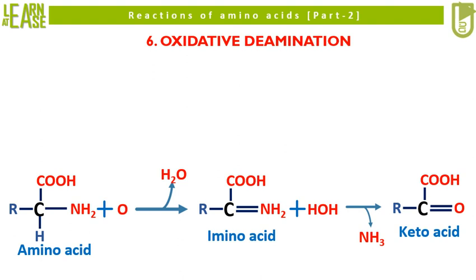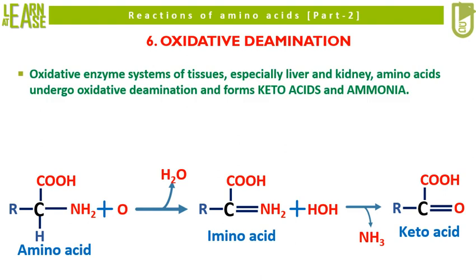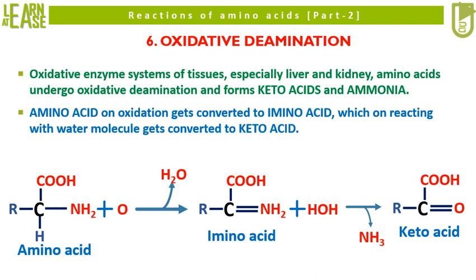Now the sixth reaction I will explain is oxidative deamination. The reaction shows that amino acid on oxidative deamination gets converted to keto acid via formation of imino acid, by a two-step reaction. Through oxidative enzyme systems of tissues, especially liver and kidney, amino acids undergo oxidative deamination and form keto acids and ammonia. Amino acid on oxidation gets converted to imino acid, which on reacting with a water molecule gets converted to keto acid. Carefully see the reaction to understand the mechanics of the reaction.